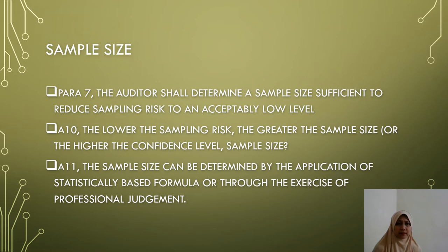Regarding sample size, paragraph 7 states the auditor shall determine a sample size sufficient to reduce sampling risk to an acceptably low level. Under A10, the lower the sampling risk, the greater the sample size required.